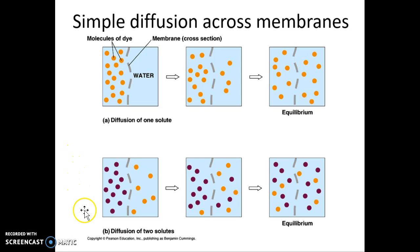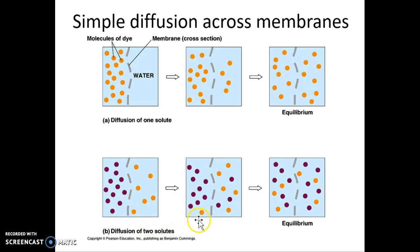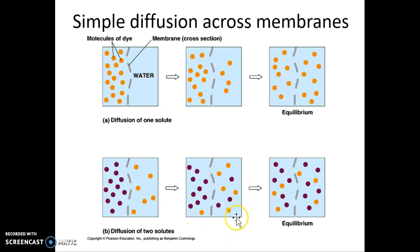Here we have diffusion of two solutes — purple dots and orange dots. The orange dots can only move to the left because there are none on the left to begin with, and the purple dots can only move to the right because there are none on the right. And that's exactly what happens. Over time, it's more likely that the orange dots continue moving left as a whole.